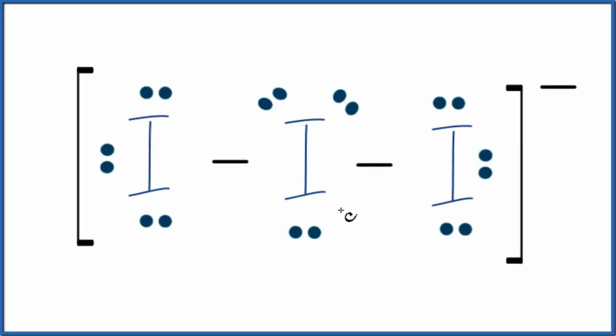In this video, we'll look at the molecular geometry for I3-. So we have three iodine atoms bonded together with single bonds and a negative charge. So this is an ion. It's called the triiodide ion.